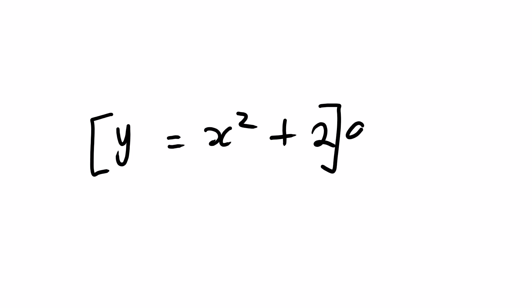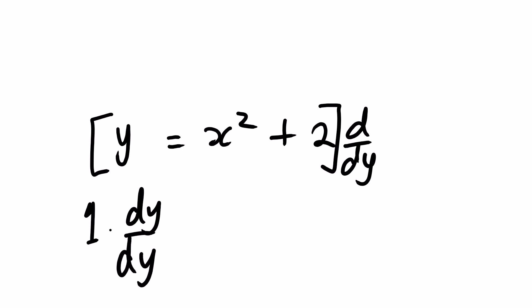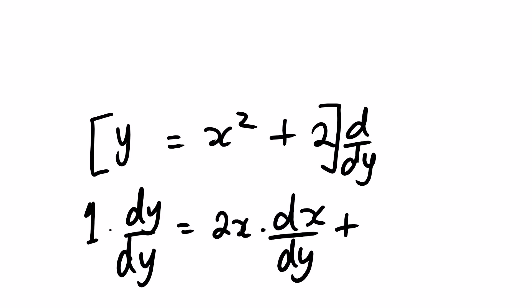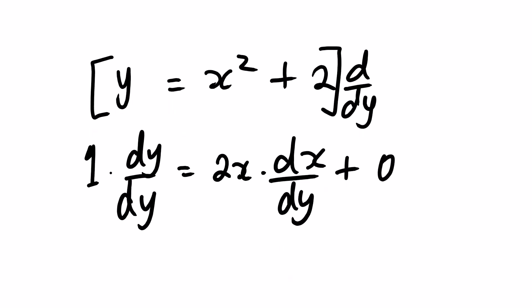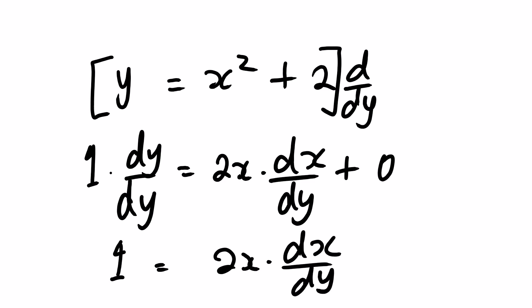Now for the derivative of the same equation with respect to y: the derivative of y is 1, giving dy over dy, plus 2x multiplied by dx over dy, and the derivative of a constant is always 0. From here we have 1 equals 2x multiplied by dx over dy. You can see that when deriving with respect to a different variable, it is important to write this chain rule term — we are going to need this skill when we look at related rates.